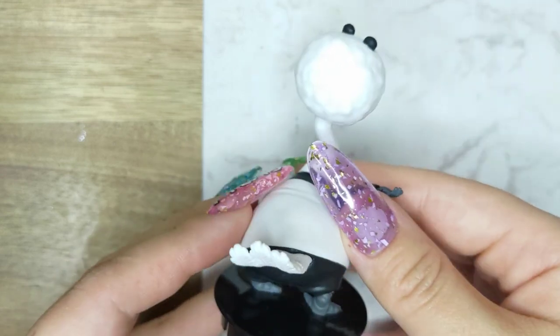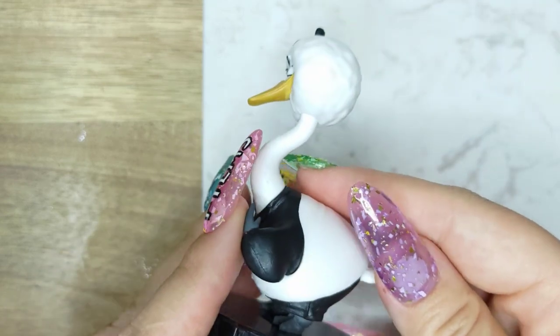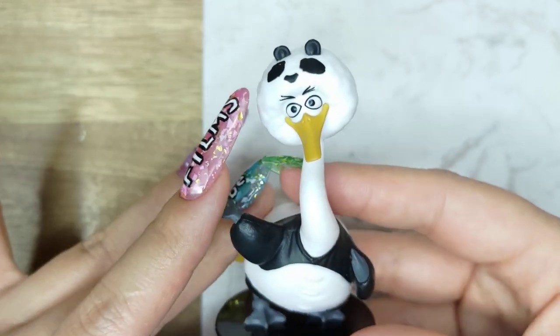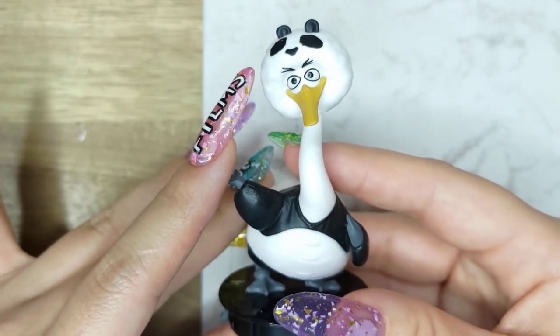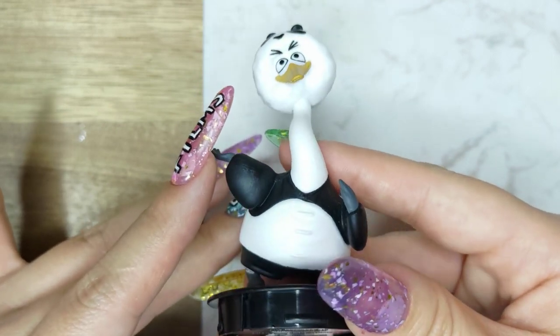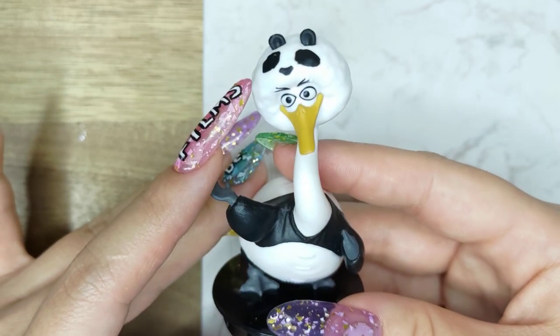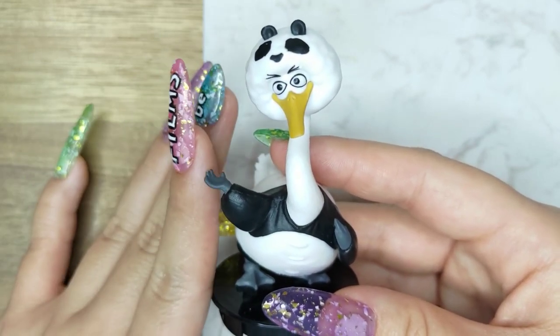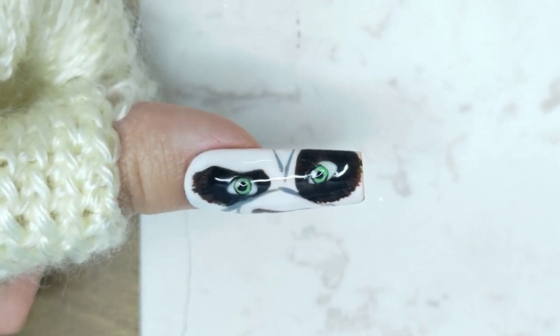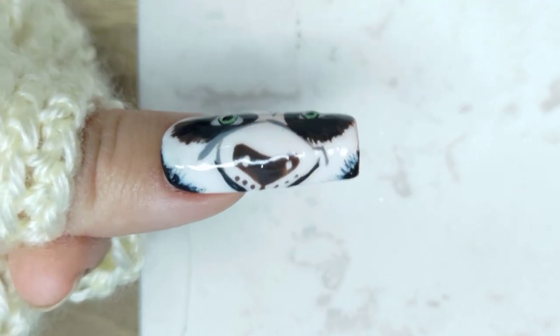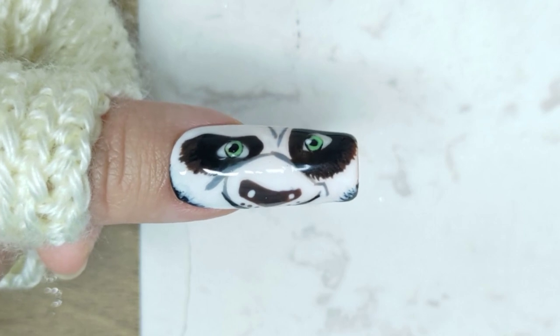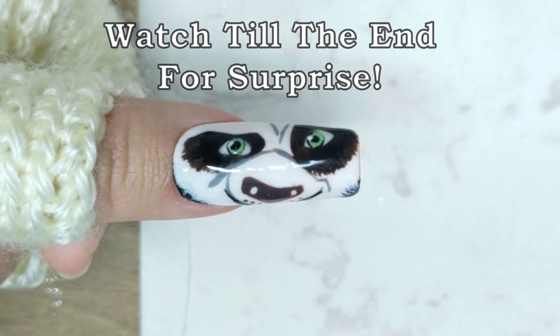I'm still writing the script for my Kung Fu Panda 4 review, so in the meantime, I decided to make a video about the previous movies first. I initially wanted to make one video about the first three movies, but my review for the first one turned out to be way too long, so I decided to split it into two. I'll be releasing another video soon to talk about Kung Fu Panda 2 and 3, and after that, I'll make another video on Kung Fu Panda 4. There's actually more to this nail than meets the eye. Stay till the end for the surprise.